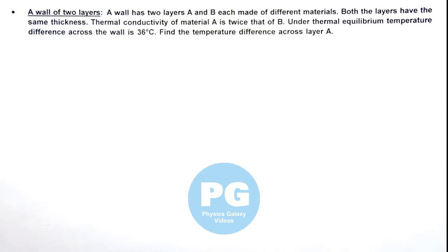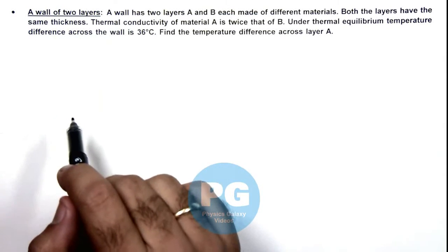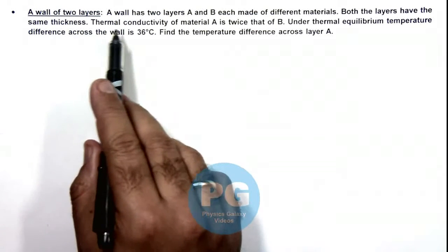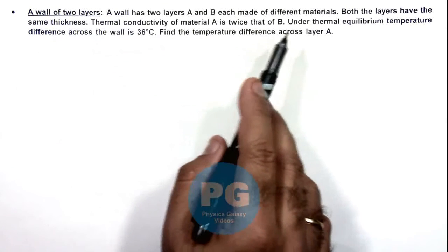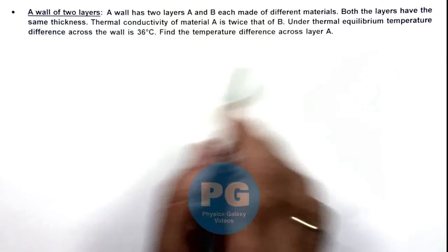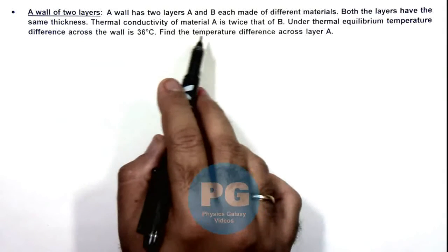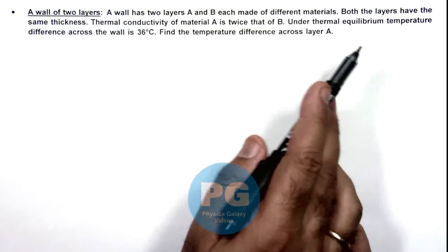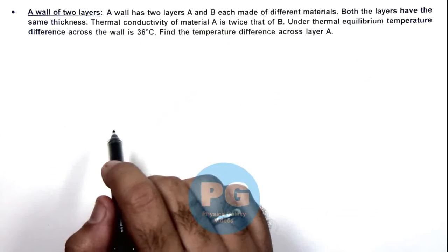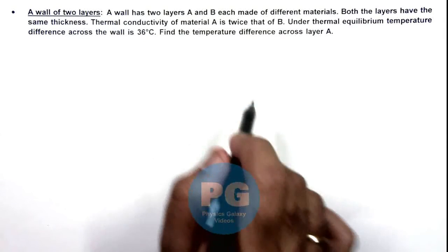In this illustration we'll analyze a wall of two layers for thermal conduction. Here we are given that a wall has two layers A and B, each made of different materials, and both layers have the same thickness. Thermal conductivity of material A is twice that of B, and under thermal equilibrium, the temperature difference across the wall is 36 degrees Celsius. We are required to find the temperature difference across layer A.